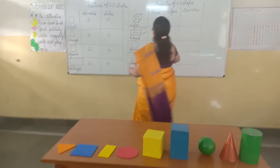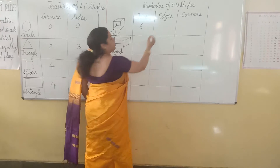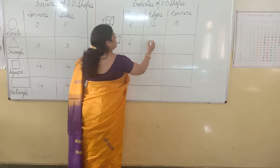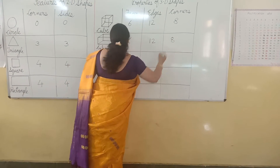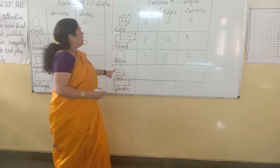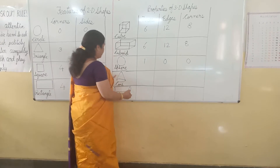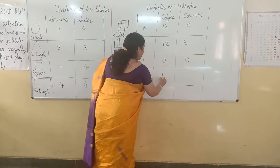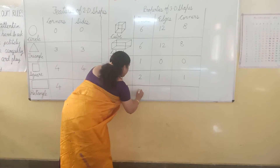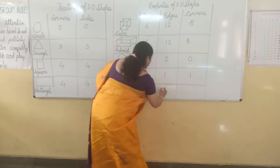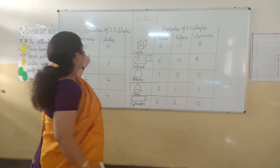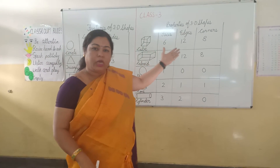So, you have learnt: cube has 6 faces, 12 edges and 8 corners. Cuboid has 6 faces, 12 edges and 8 corners. Sphere has 1 face, 0 edges and 0 corners. Cone has 2 faces, 1 edge and 1 corner called the tip. Cylinder has 3 faces, 2 edges and 0 corners. These are 3D shapes. Today we have learnt the features of 2D shapes and properties of 3D shapes. Thank you.